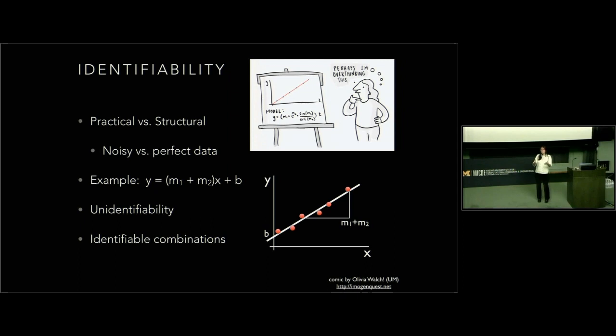Now, usually at this point someone says: why not just combine them into a slope parameter called m and move on? And that's the idea of identifiable combinations. You can't estimate m1 and m2 separately, but you can estimate their sum. That's perfectly okay unless m1 is the critical decision-making parameter — in which case you should measure something else so you can figure out what m1 is.